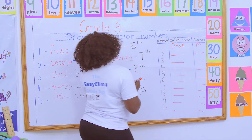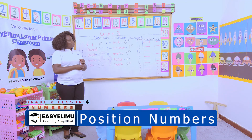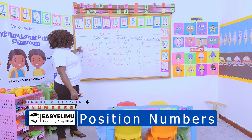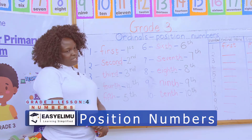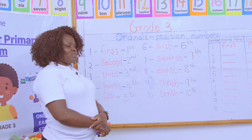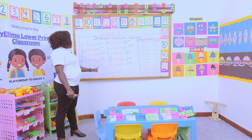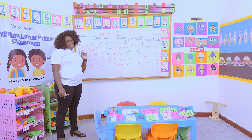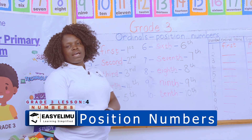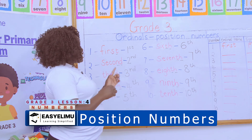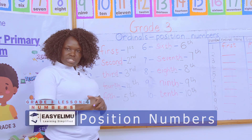Are we together, class? As simple as that. Who cannot write ordinals 1 to 10 using the name and the symbol? I can. Very good. You can now write the ordinals from 1 to 10 using the name and the symbol. I want to wish you a nice day and I hope to see you in the next lesson as we continue to tackle numbers 11 up to 20.